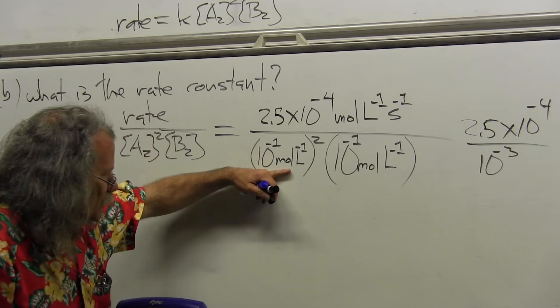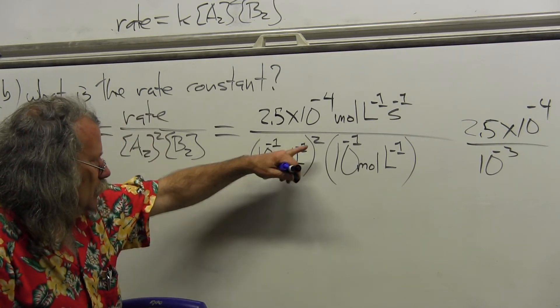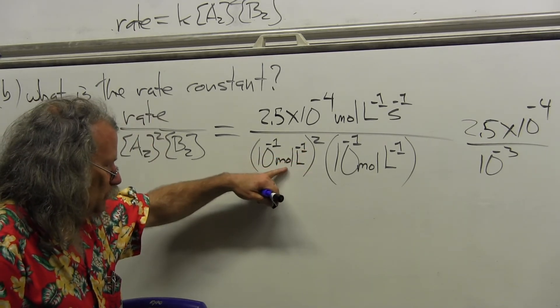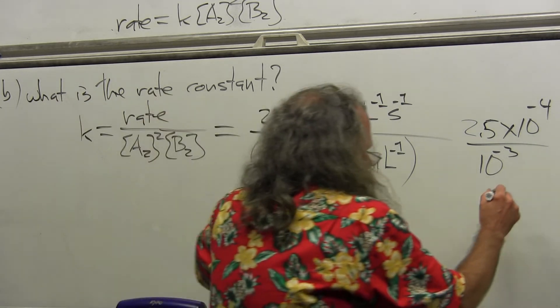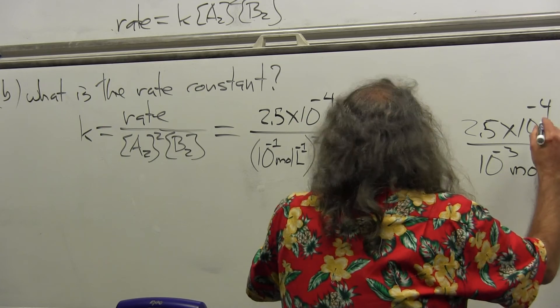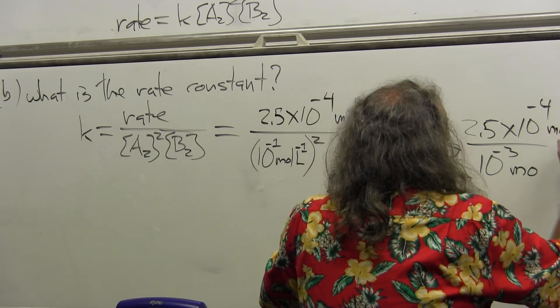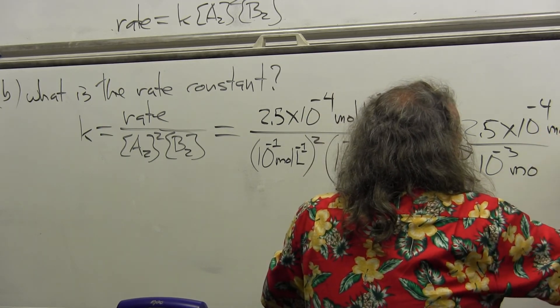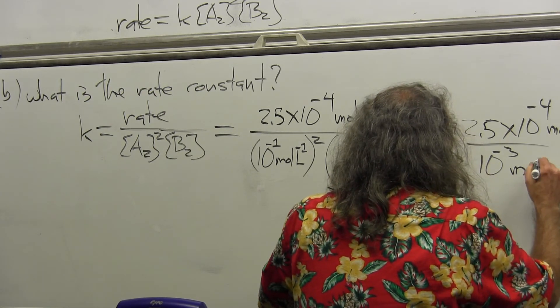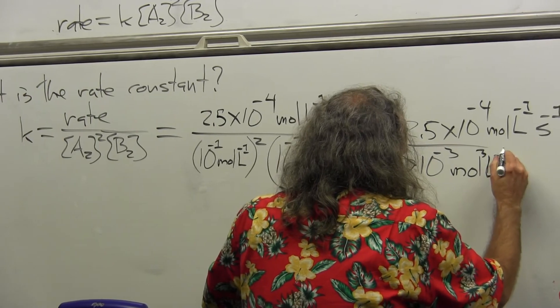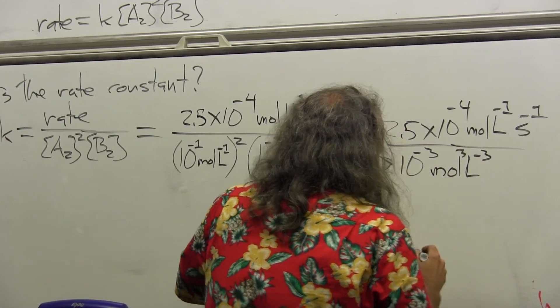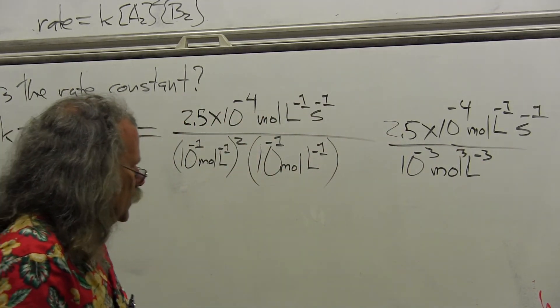But now let's get the units straight. This is moles per liter, that's squared, so it's moles squared per liter squared times moles per liter. So it's moles per liter per second, and this would be moles cubed per liter cubed.